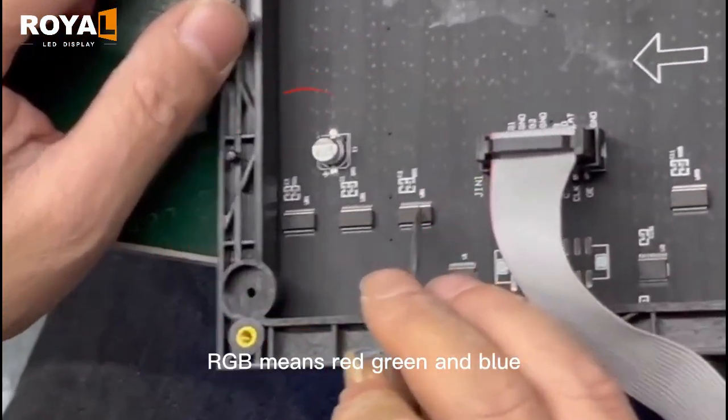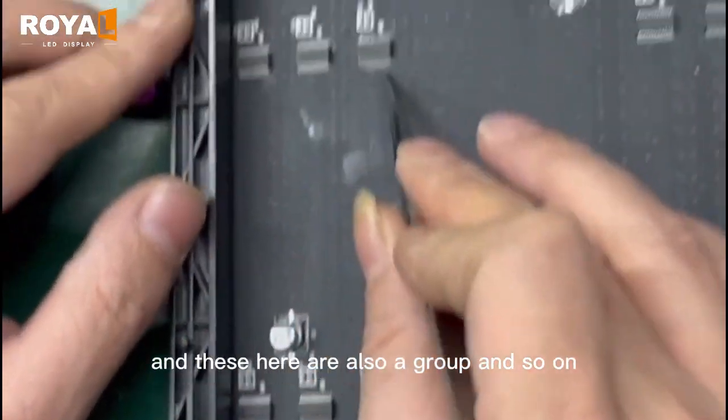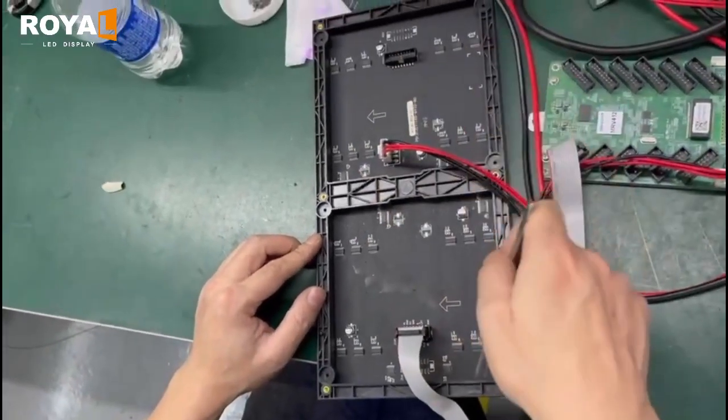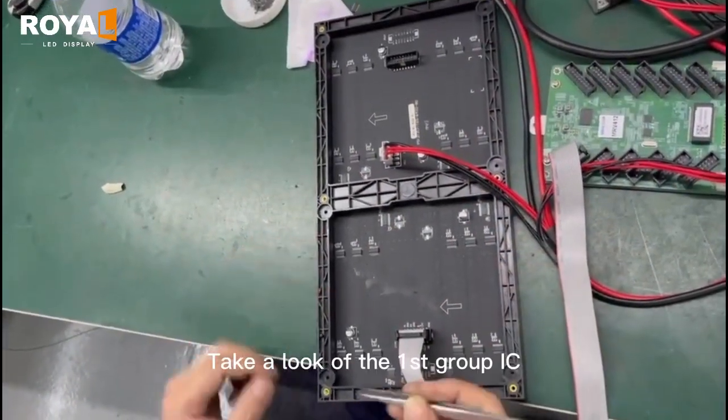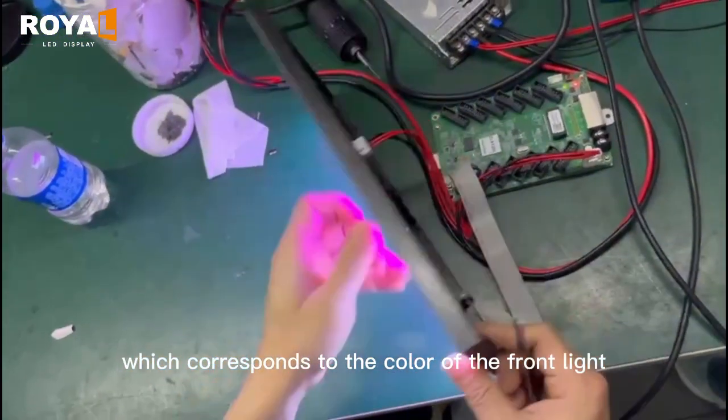RGB means red, green, and blue. These three ICs are a group, and these here are also a group, and so on. Take a look at the first group IC, which corresponds to the color of the front light.